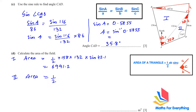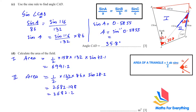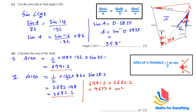Area two uses sides 132 and 86 with included angle 28.2: ½ × 132 × 86 × sin 28.2 = 2682.2 square meters. Adding both areas: 6991.2 + 2682.2 = 9673.4 square meters. Any answer between 9670 and 9676 will be accepted.